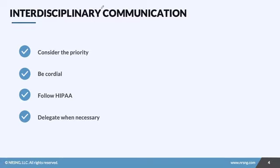When talking about prioritization, it's important to consider interdisciplinary communication, because this is where all the different functions in the hospital have to work together. For example, if we have a hypotensive patient — something we must be dealing with right now — physical therapy may need to come and ambulate another patient we're caring for so that we can stay with our hypotensive patient during that situation.